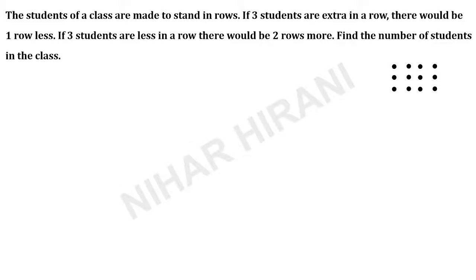Hello, let us solve this question. The students of a class are made to stand in rows. If 3 students are extra in a row, there would be 1 row less. If 3 students are less in a row, there would be 2 rows more. Find the number of students in the class.